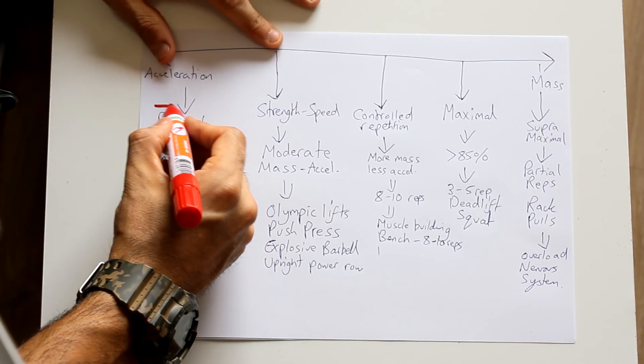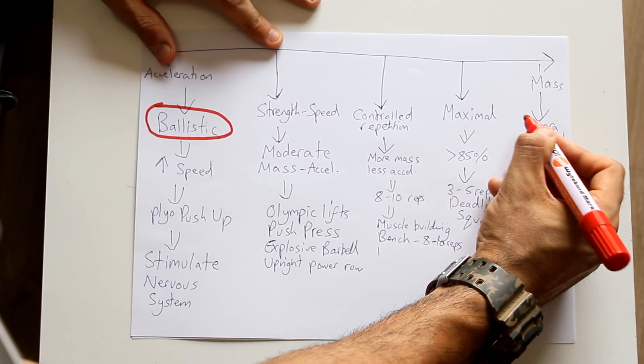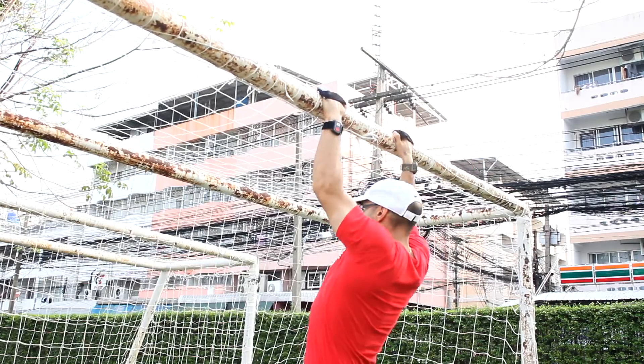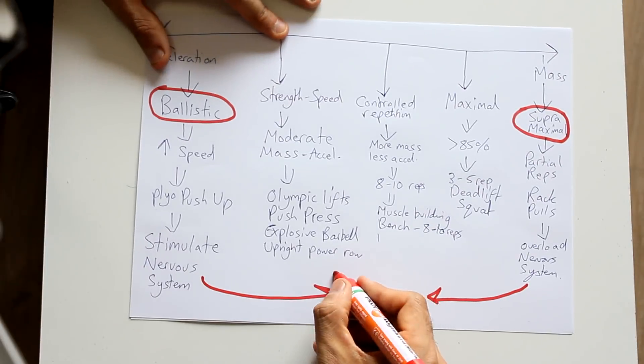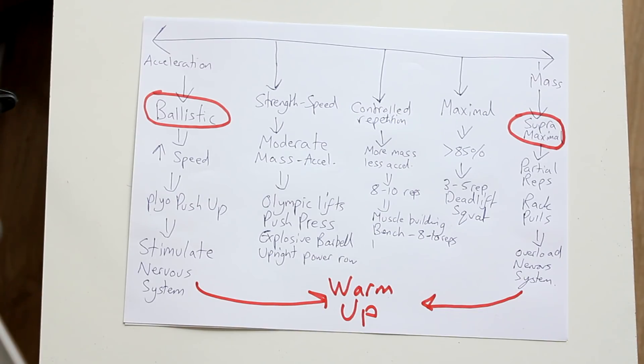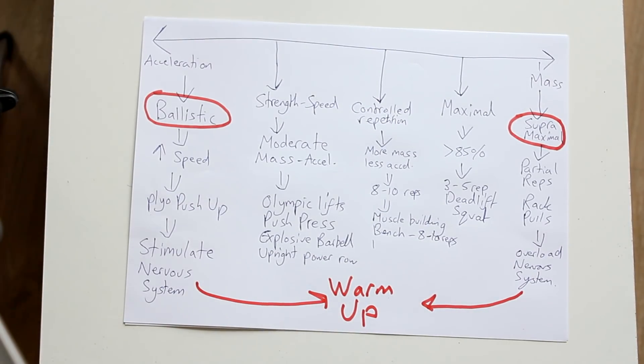The speed bench is very acceleration-dominant. You are focusing on speed, not mass, so you use a light to moderate weight. You are training for performance — you don't want to push to the point of fatigue. You want to stay explosive, and where you stop being explosive is where you stop your reps. You can also use speed exercises, ballistics, plyometrics, medicine ball throws, and speed benches. Alternatively, go to the opposite end of the spectrum and use supramaximal heavy exercises in your warm-up, as they also heavily overload your nervous system.